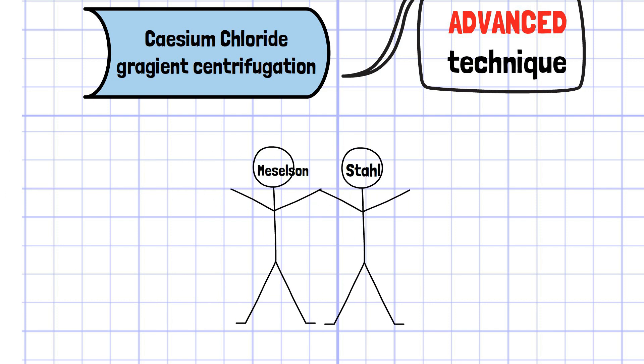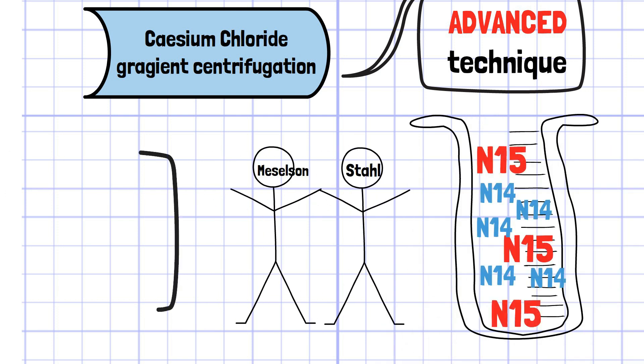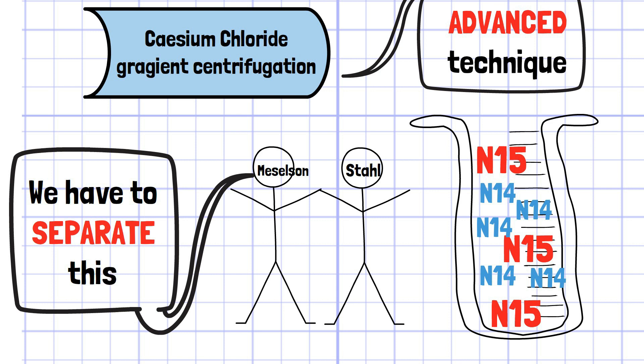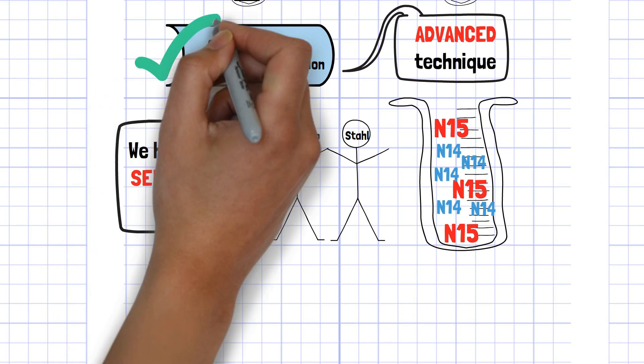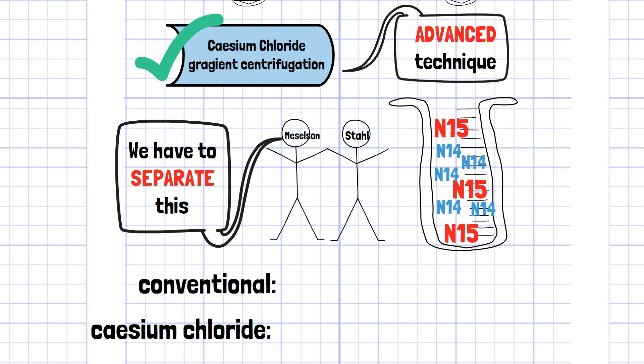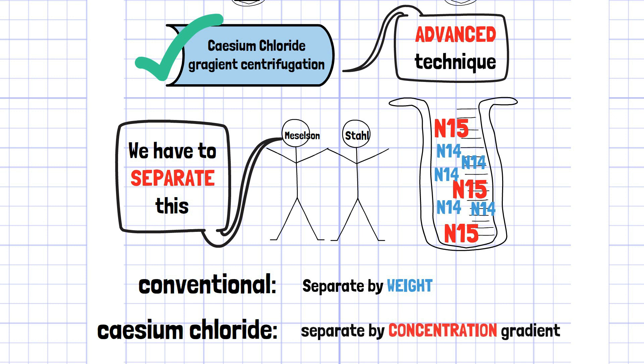In Meselson and Stahl's experiment, DNA containing two elements of slightly different mass, nitrogen 15 and 14, had to be separated. By using cesium chloride, unlike conventional centrifugation, the solution is not completely separated into heavy and light, but separates while forming a concentration gradient. In other words, this makes it possible to know not only the relative mass, but also the concentration.